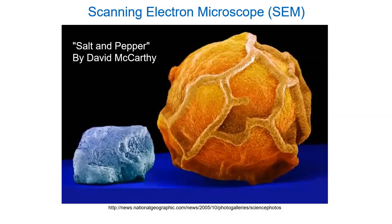Of course there are people who get artsy with SEM images. This one's called 'salt and pepper' — I think it was a National Geographic photography contest. You can see a salt crystal, and I believe that's pollen from pepper or a peppercorn — very, very cool.